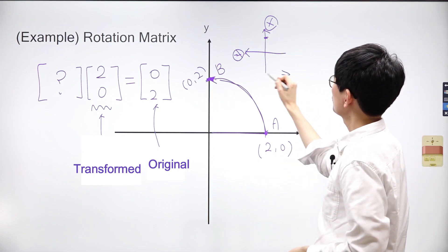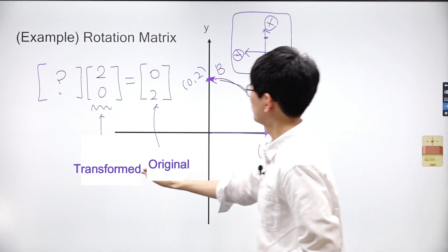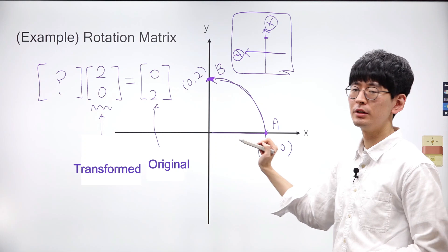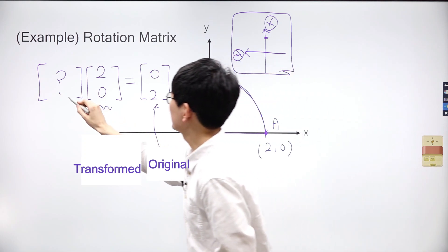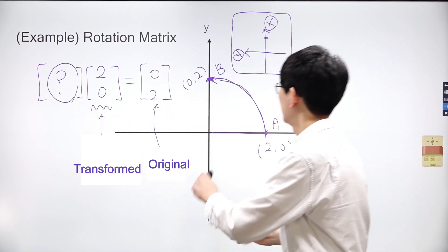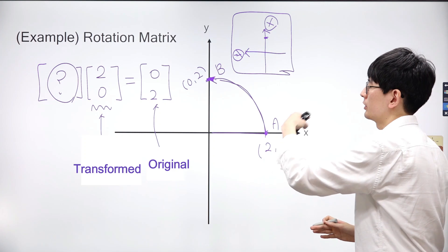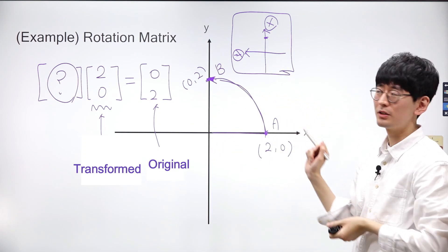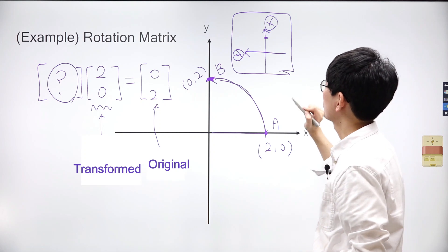Thus, in this new coordinate system, the vector's coordinates would be (2,0), whereas in the original coordinate system, they would be (0,2). So the vectors in the unknown matrix serve as new axes that are rotated 90 degrees counterclockwise.